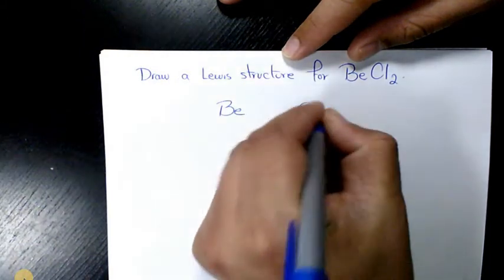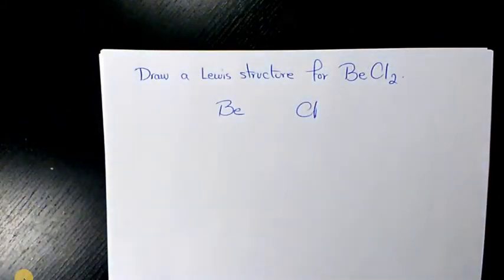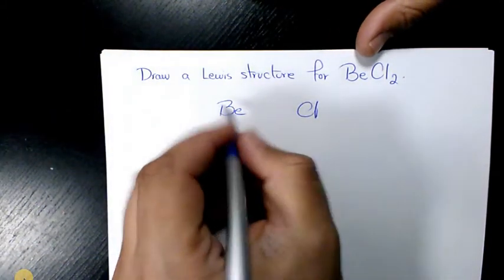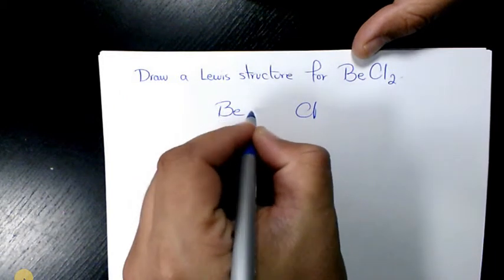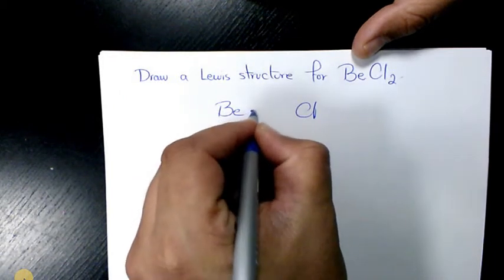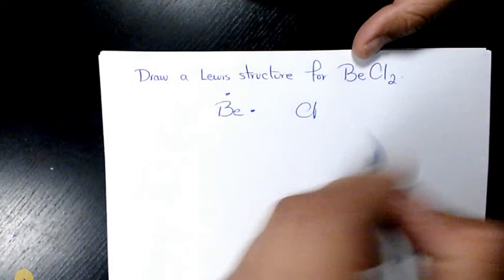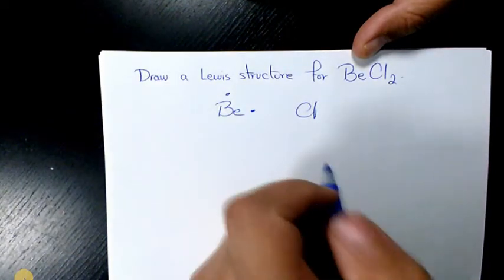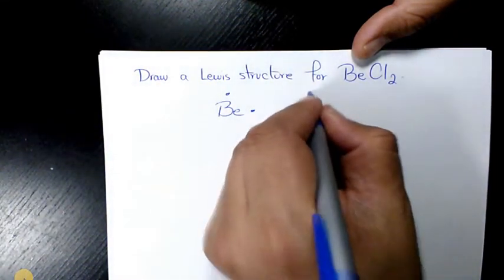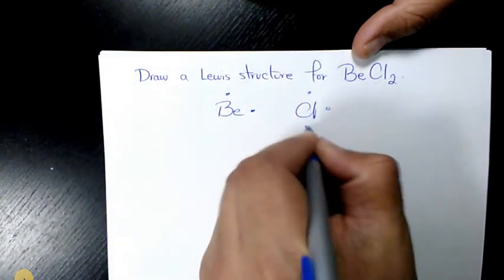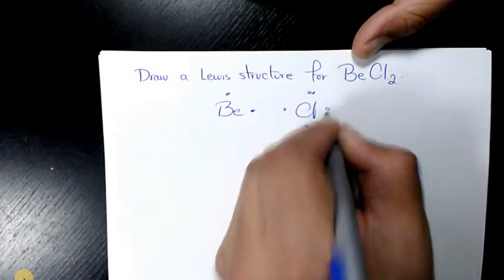We need to find out which one is the surrounding atom and which one is the central atom. Beryllium has two valence electrons, and chlorine has seven valence electrons: one, two, three, four, five, six, and seven.